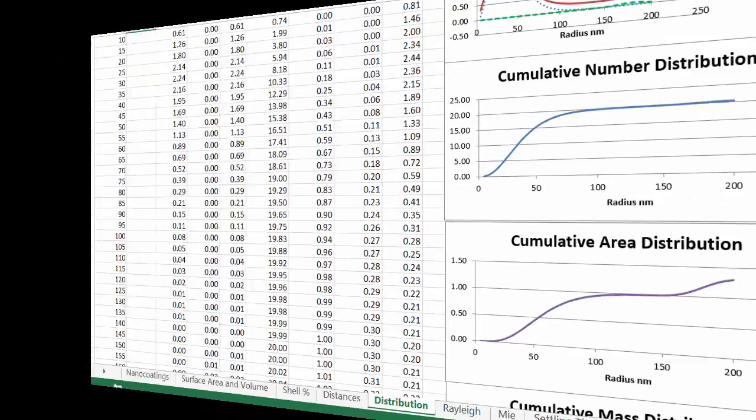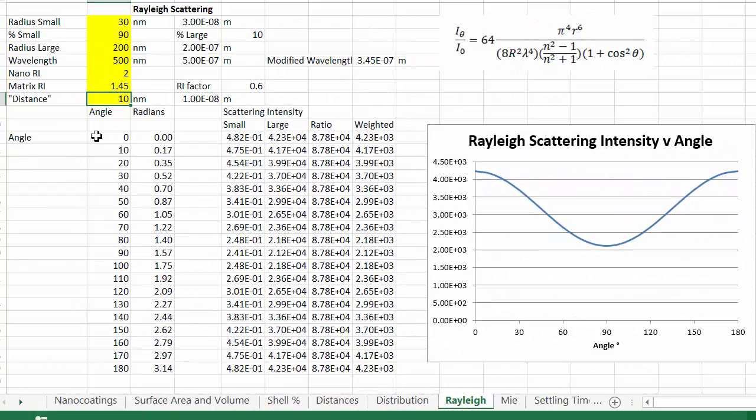So you can play around with these numbers in the spreadsheet. For scattering, size matters. And here's a Rayleigh scattering calculation. The formula is fairly complicated, but the maths is done for you. We have some small nanoparticles, 30 nanometers, and we have some large nanoparticles at 200 nanometers.